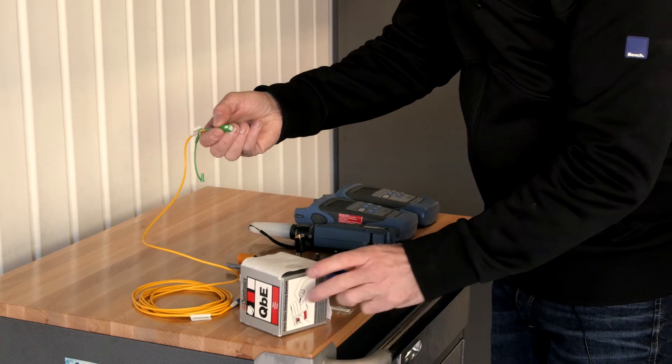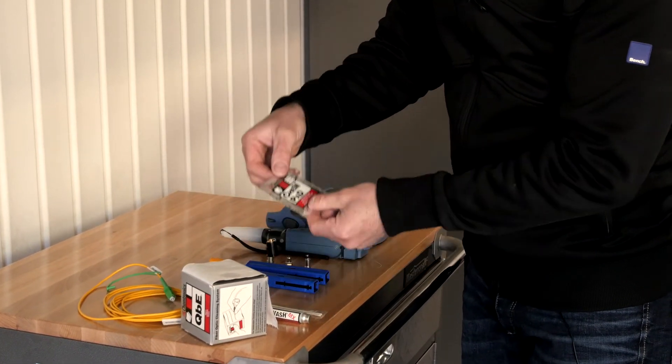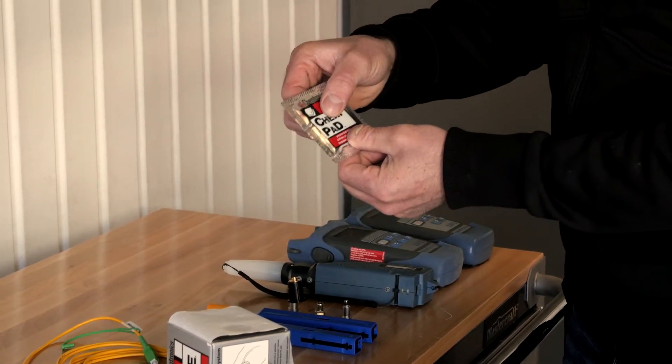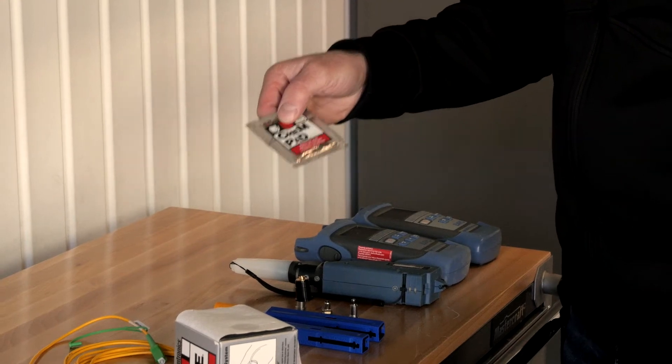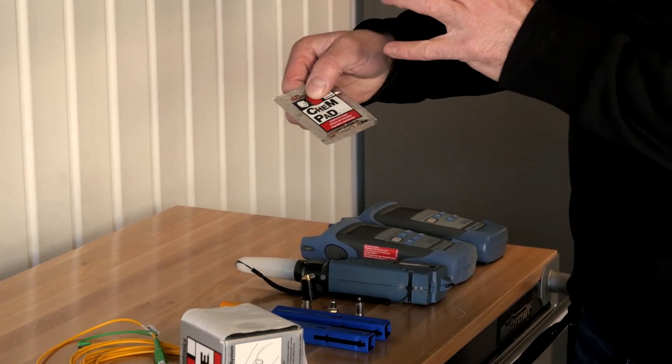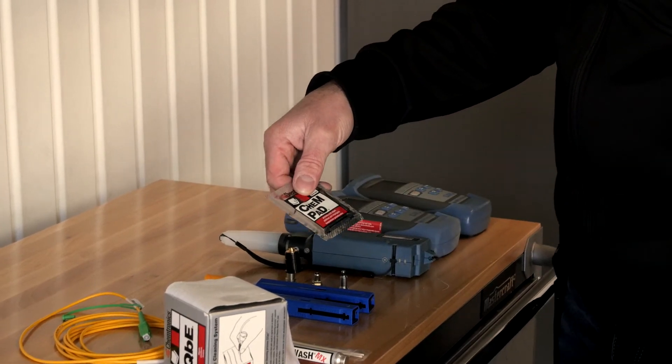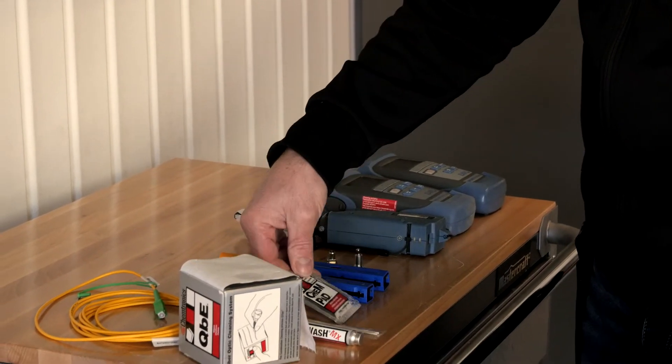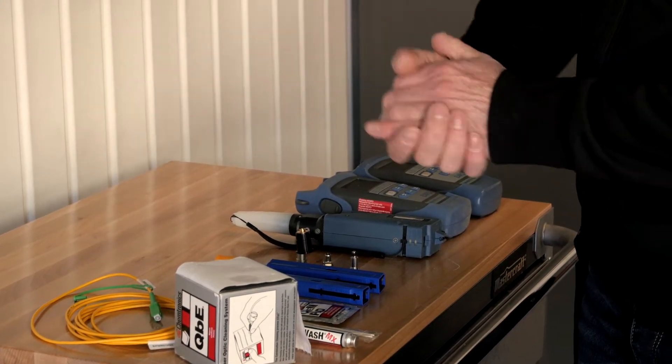There's another method that can be used using pre-saturated swabs like this. These have a liquid designed for optical cleaning. If you use those, again, you have to use something dry after to dry the connector and remove the residue, because this residue can interfere with the transmission of the light.